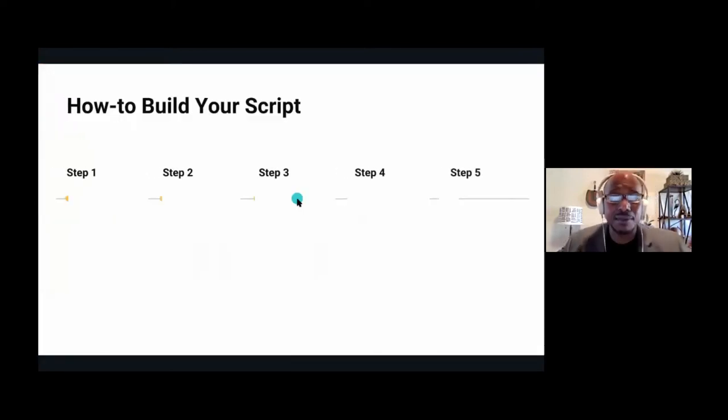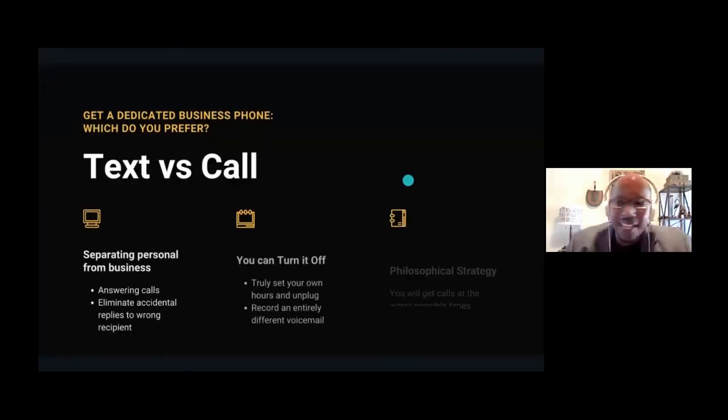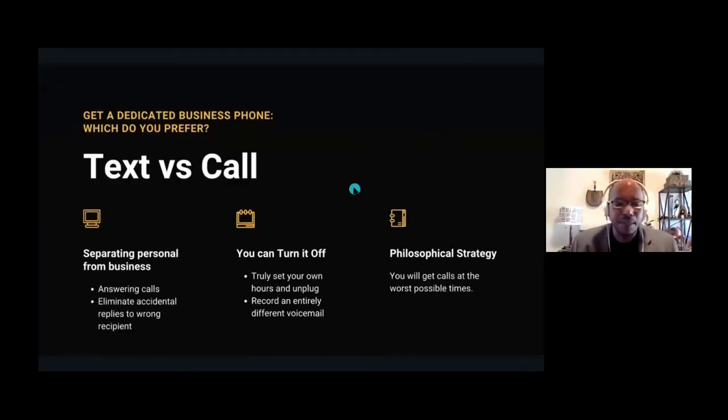Let's build this call script. Number one, gotta get a dedicated business phone. The reason why you gotta get a dedicated business phone is because you gotta separate business from personal. When you're driving down the street, down the highway, down the freeway, and you have two separate phones, then one phone rings and you know it's about business.